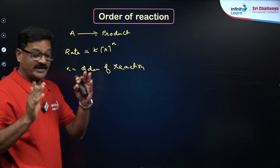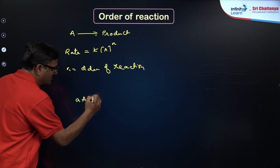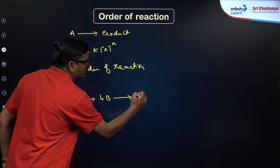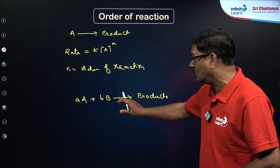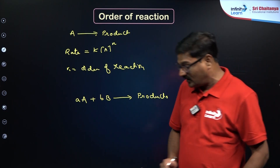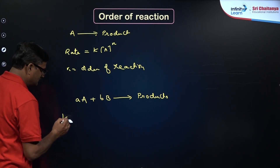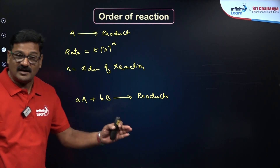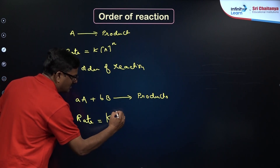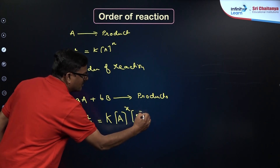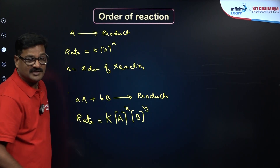The order is determined from experimental data. Let us say a moles of A combined with b moles of B gives rise to its respective products. Here, the small a and small b indicate stoichiometric numbers. But the rate law can be written as: rate = k[A]^x [B]^y, where x is the order with respect to A and y is the order with respect to B.